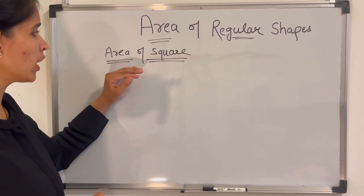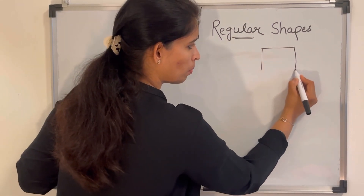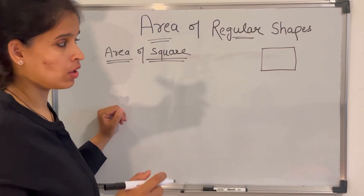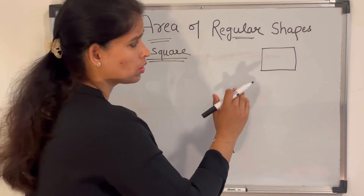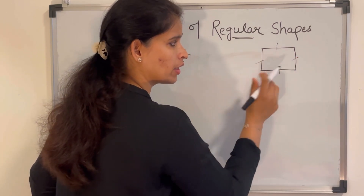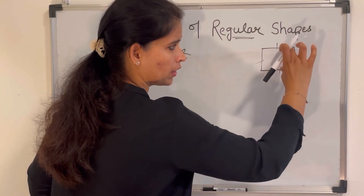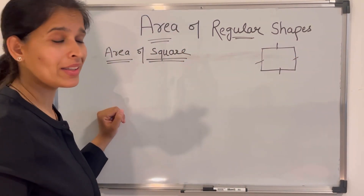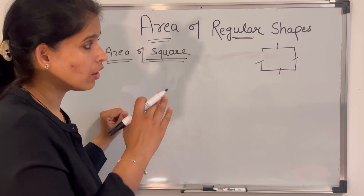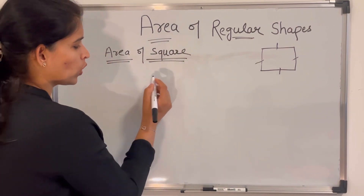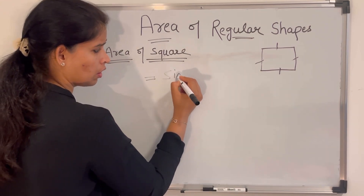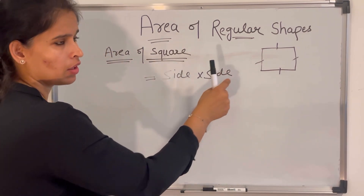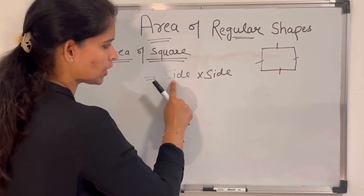Now we will learn how to find the area of a square. A square is a special kind of rectangle whose all sides are equal. In a rectangle, opposite sides are equal, but in a square, all four sides are equal. So the area of a square is side multiplied by side.